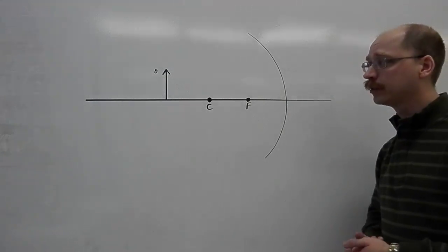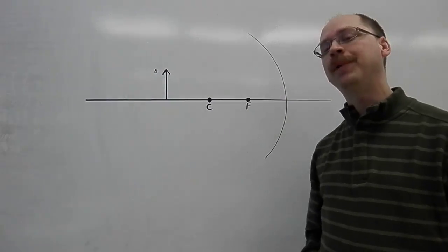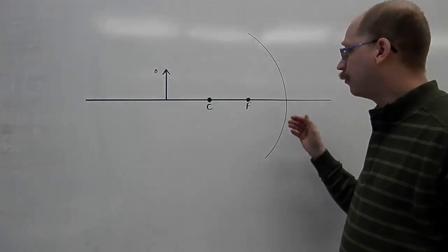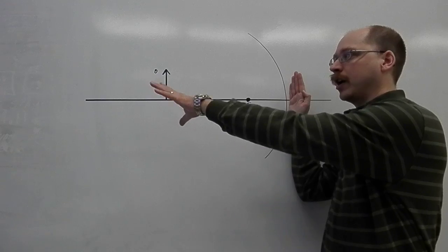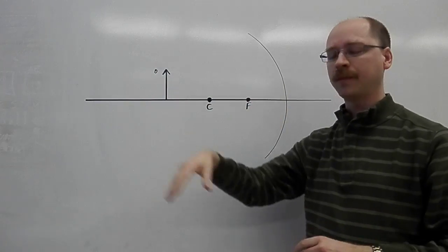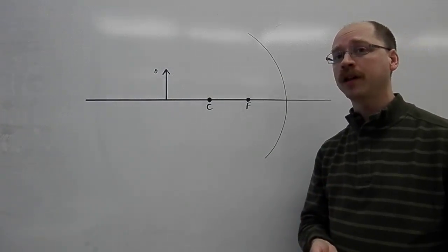In this particular diagram, I've placed the object out beyond the center. Usually, if we're going to talk about the position of our object, for example, I would describe it as though I was measuring from the vertex going out that way. So I'm beyond the focus, I'm beyond the center, I'm out there. That will give very specific characteristics to our image.